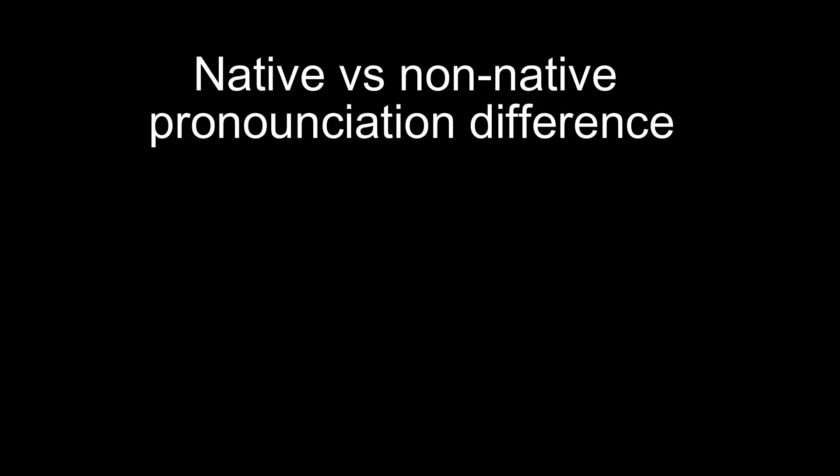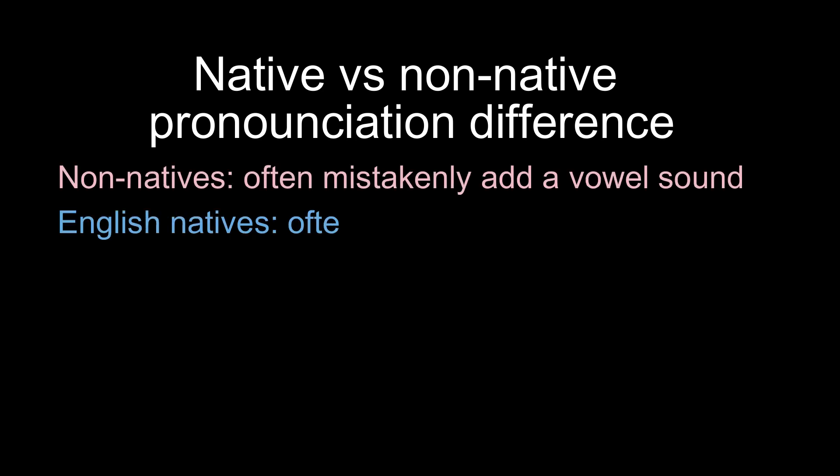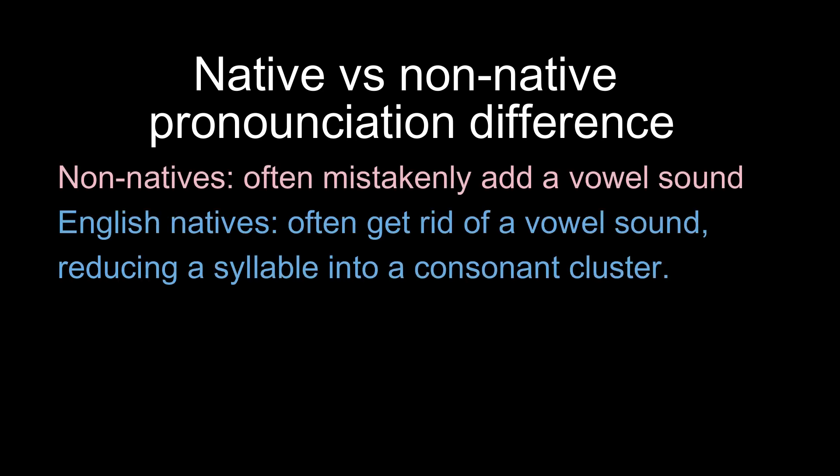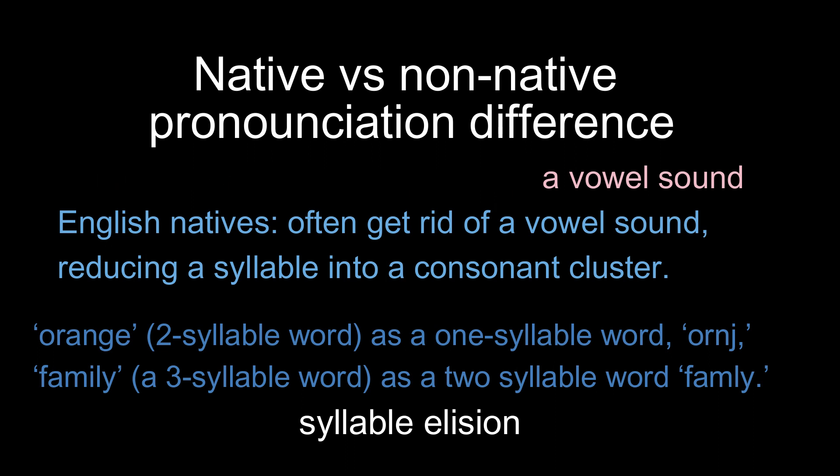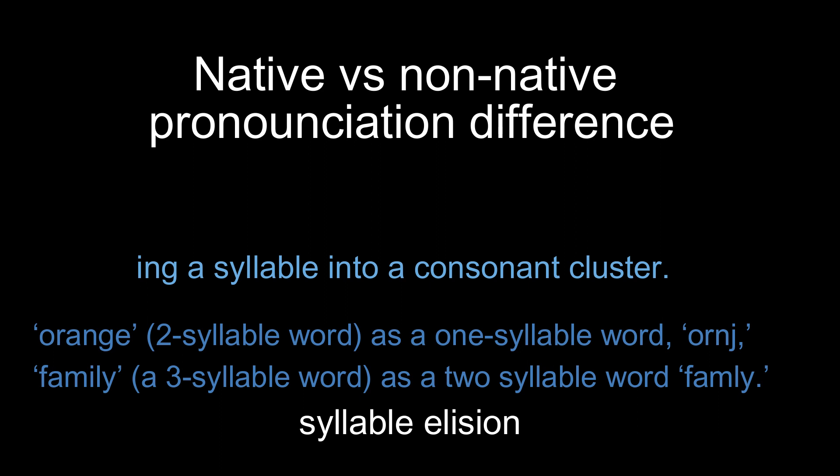While non-natives whose language don't permit consonant clusters might mistakenly add a vowel sound between consonants, English natives tend to get rid of a vowel sound, reducing a syllable into a consonant cluster. So, for instance, many Americans pronounce orange as a one-syllable word, orange, and family, a three-syllable word, as a two-syllable word, family. This phenomenon is called syllable elision, deletion, which we examine in Chapter 3 when we discuss sound modification.